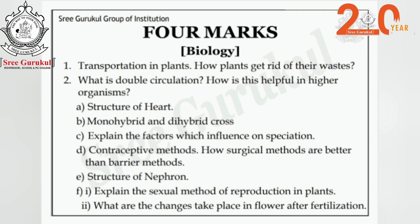For 4-mark questions in biology, expect: transportation in plants, how plants get rid of their waste, what is double circulation and how it is helpful in higher organisms, structure of heart, monohybrid and dihybrid cross, factors influencing speciation such as genetic drift, natural selection, reproductive isolation, and geographical barriers, contraceptive methods and how surgical methods are better than barrier methods, structure of nephron, sexual method of reproduction in plants, and what changes take place in a flower after fertilization.